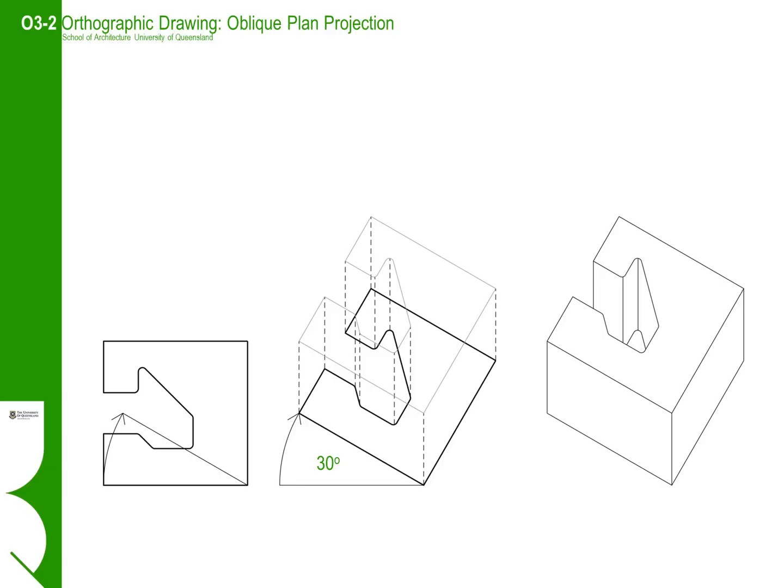By and large, we typically do not show hidden detail on paraline drawings. At the end of the exercise, you should have a three-dimensional view something similar to the drawing on the right-hand side of this slide.